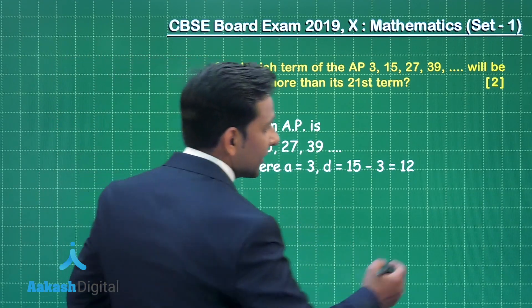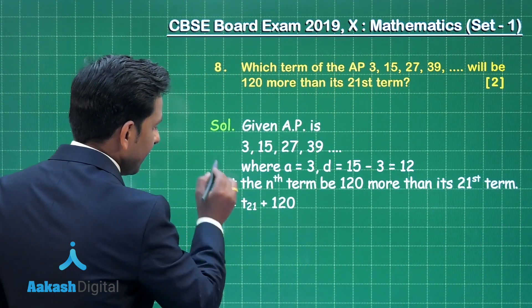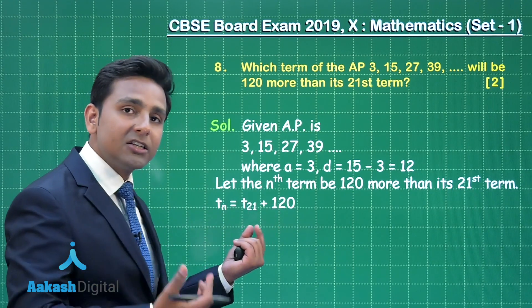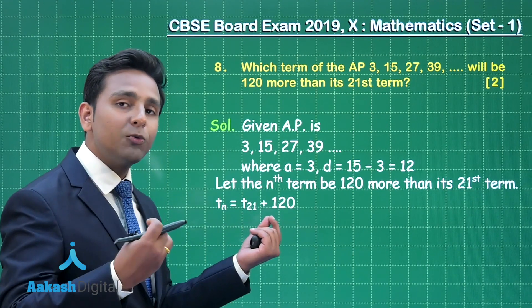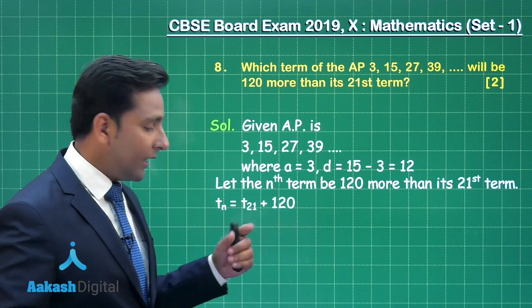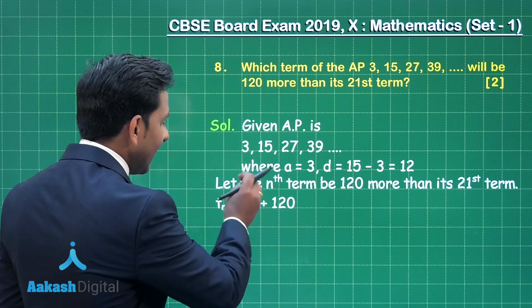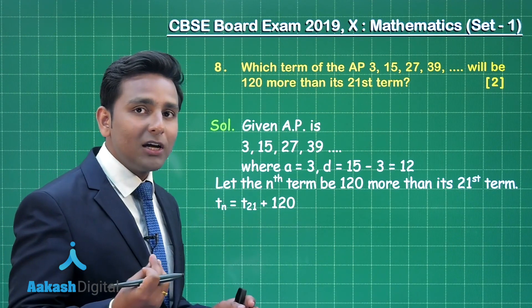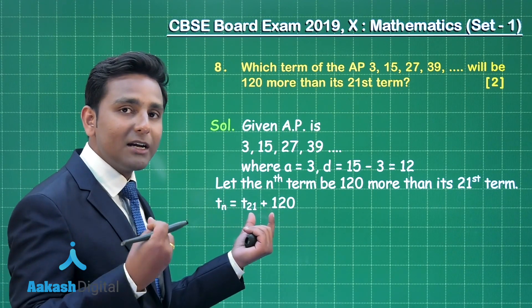We can represent the given information with this relation: Tn is the nth term and T21 is the 21st term of the given arithmetic progression. Now let us put the values of T21 and Tn. We can calculate Tn using the nth term formula — a plus (n minus 1) into d — and similarly we can calculate T21, that means the 21st term as a plus 20d.